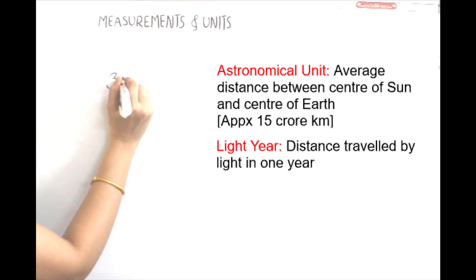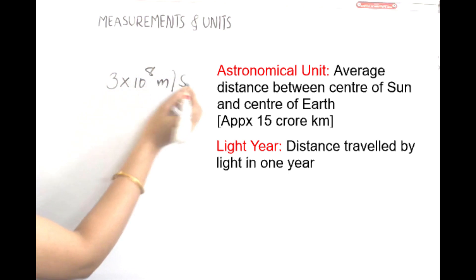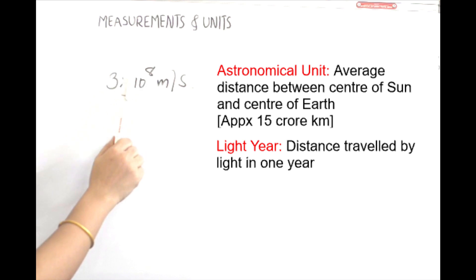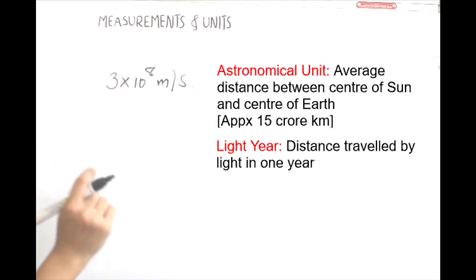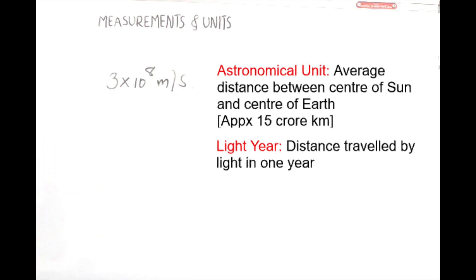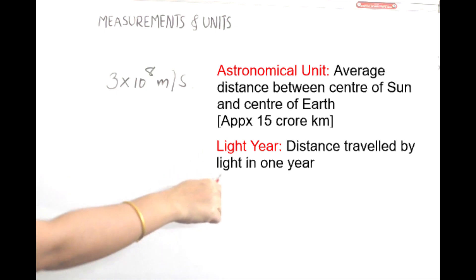The speed of light is 3 × 10⁸ meters per second. If you travel as much distance as light travels in one year, that distance is called a light year.